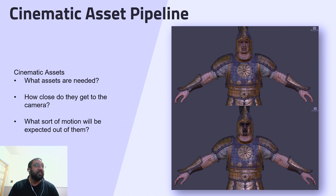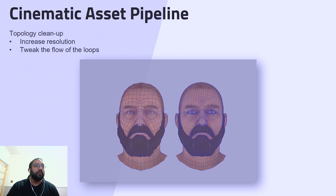So before we start the trailer, we usually answer a few questions, such as: what are the key assets that are needed, how close do they get to the camera, and what sort of motion will be expected out of them. When we answer these questions, we'll be able to figure out which characters need some extra tweaking to work closer to the camera, and if the rigs need upgrading or if there's anything else that we need to update.